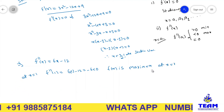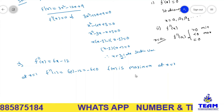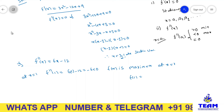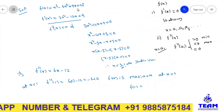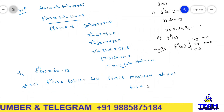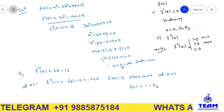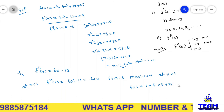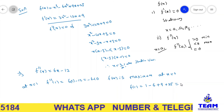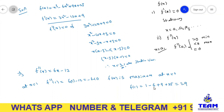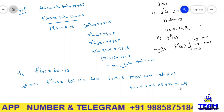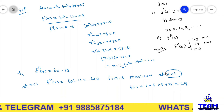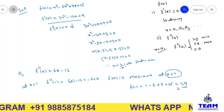To find the maximum value, we compute f of 1. Substituting into the function: 1 cube minus 6 times 1 square plus 9 times 1 plus 25 equals 1 minus 6 plus 9 plus 25 equals 29. So the maximum point is x equal to 1 and the maximum value is 29.